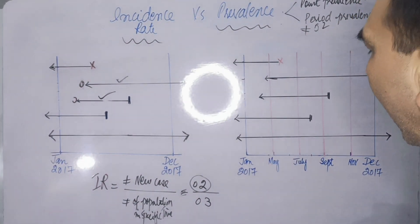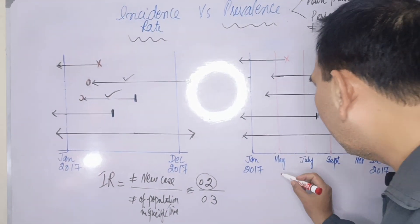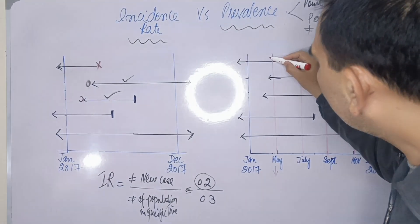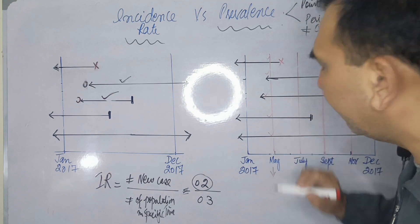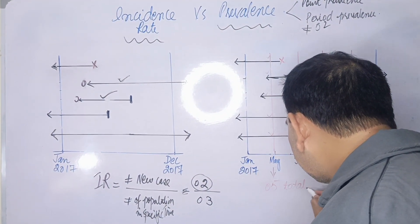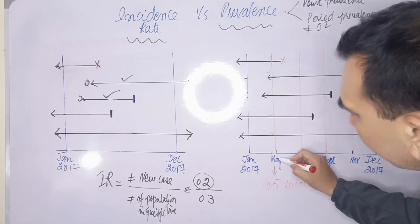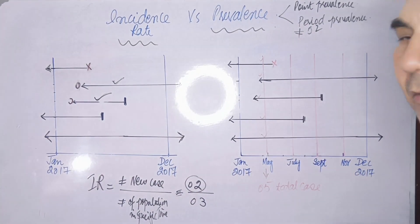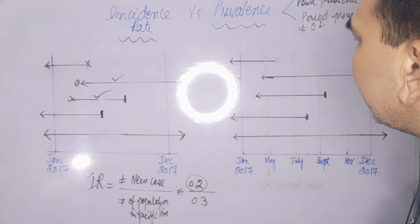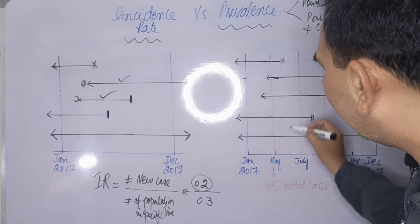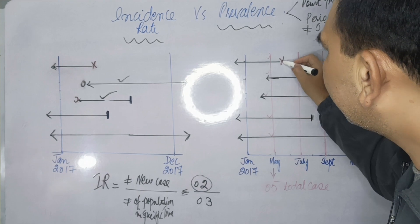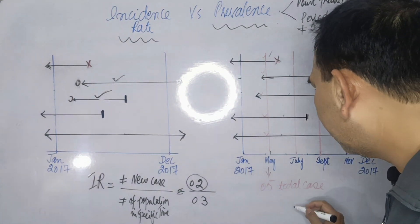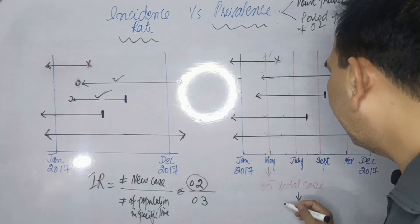Looking at the same five-case example: in the month of May, all five cases are present, so the point prevalence in May includes five cases. In the month of July, case one had died by around June, so it is excluded. Cases two, three, four, and five are present in July, giving a point prevalence of four cases.